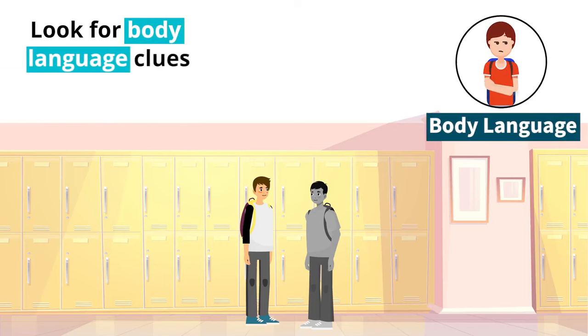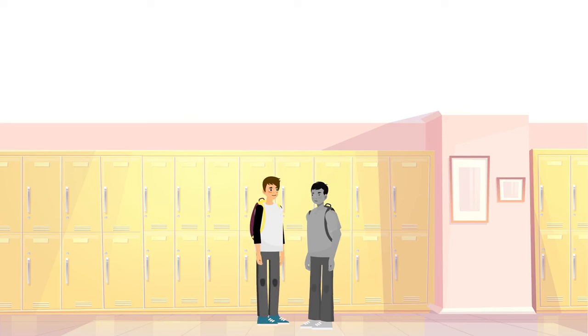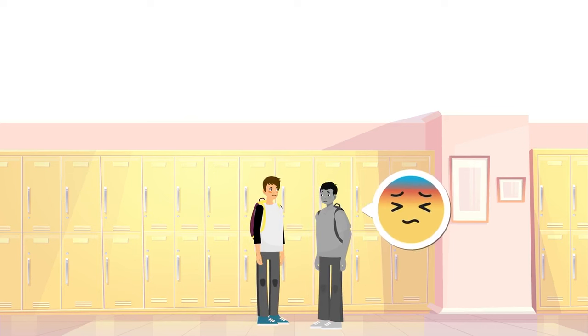Remember, we can look for body language clues to help us know if we are keeping enough personal space with someone. If they move their body away from us, that's a clue that we are too close and should leave more space between ourselves.